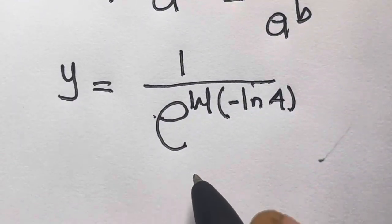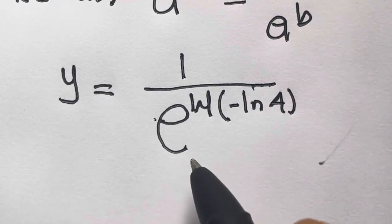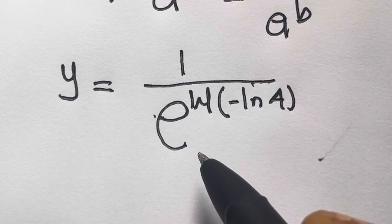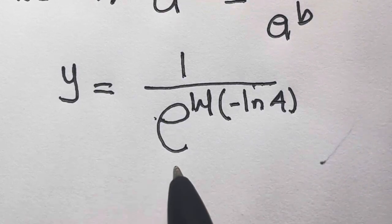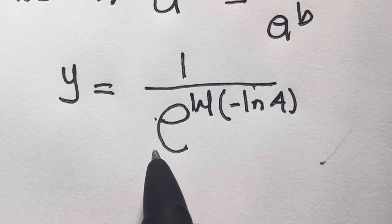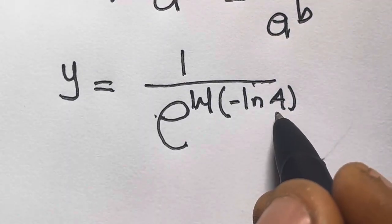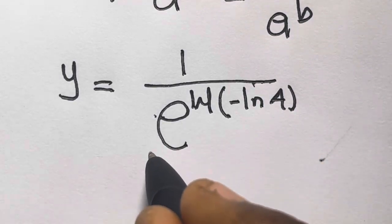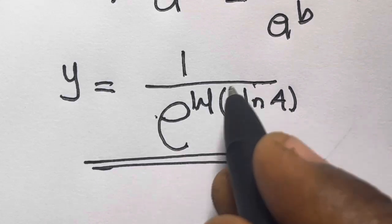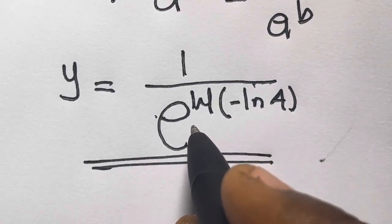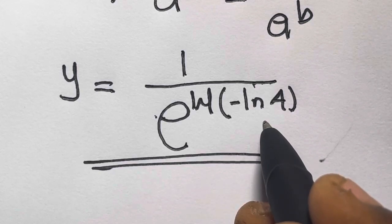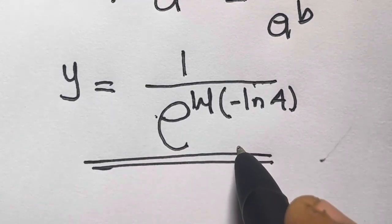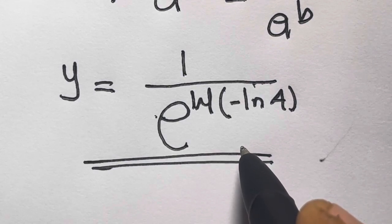You can check this with Wolfram Alpha, Python, or an advanced scientific calculator. When I do that I see that the exact decimal value of this doesn't exist as a simple number. So you can declare this as your answer. If you are solving in a Lambert W exam or any exam, you can leave your answer as y equals 1 divided by e^(W(-ln 4)). That is your answer. Thank you for watching. Please like, leave a comment, share with your friends, and subscribe to my channel to stay updated on my next video. Bye.